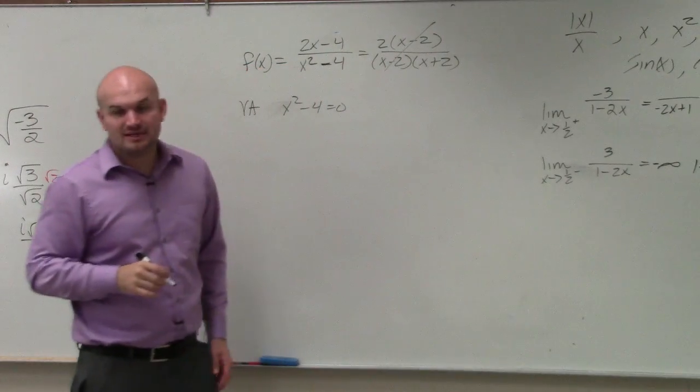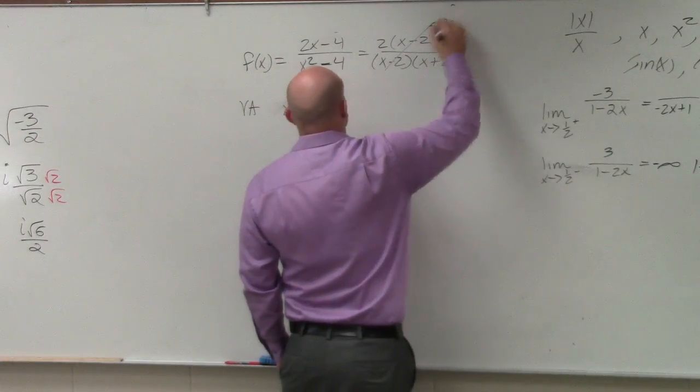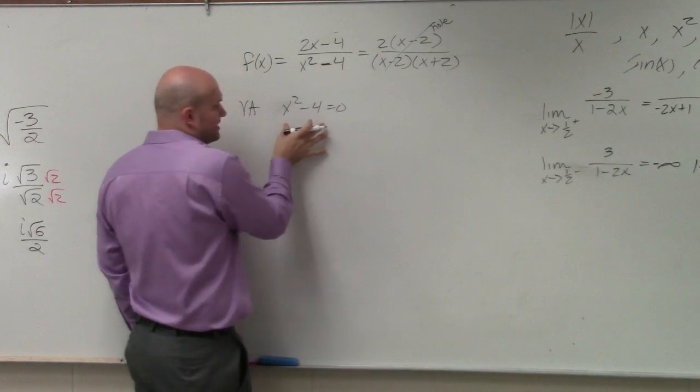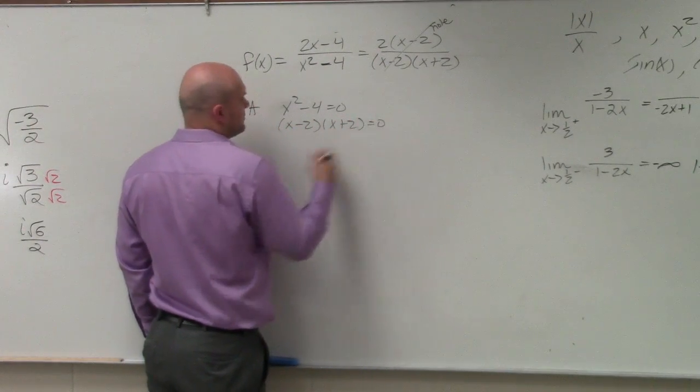x minus 2 is a discontinuity, but it's a hole. I'm going to set this by factoring. So that's x minus 2 times x plus 2 equals 0.